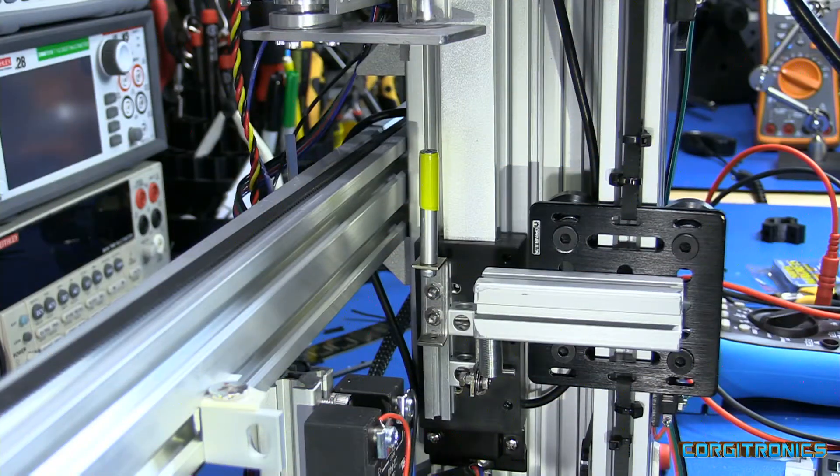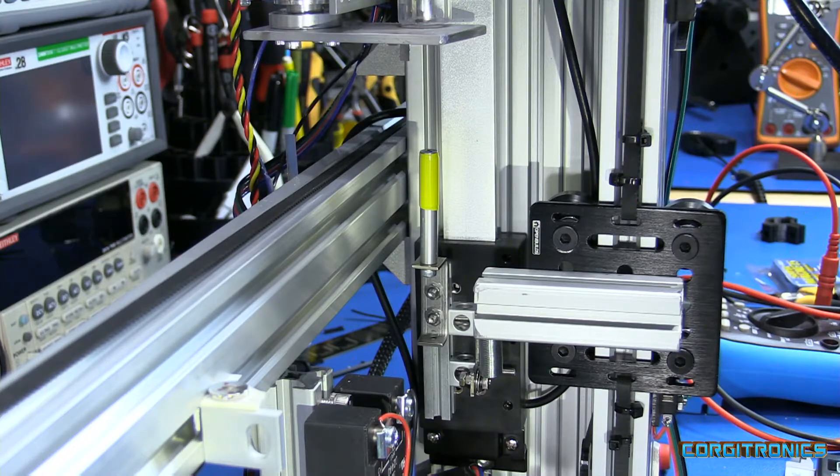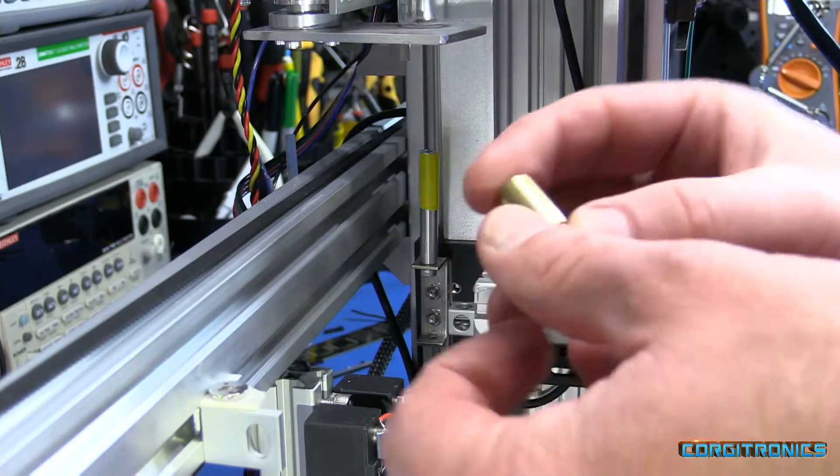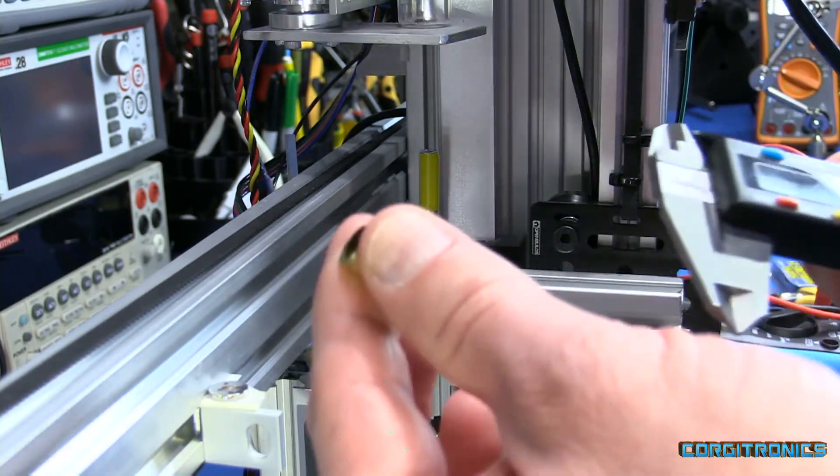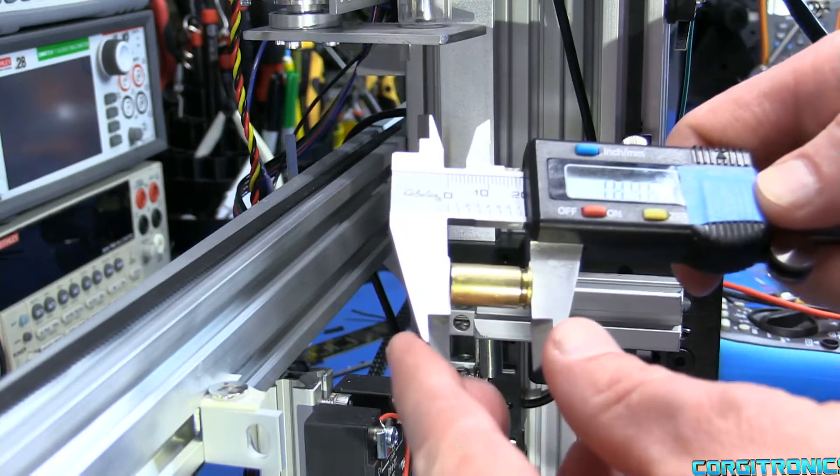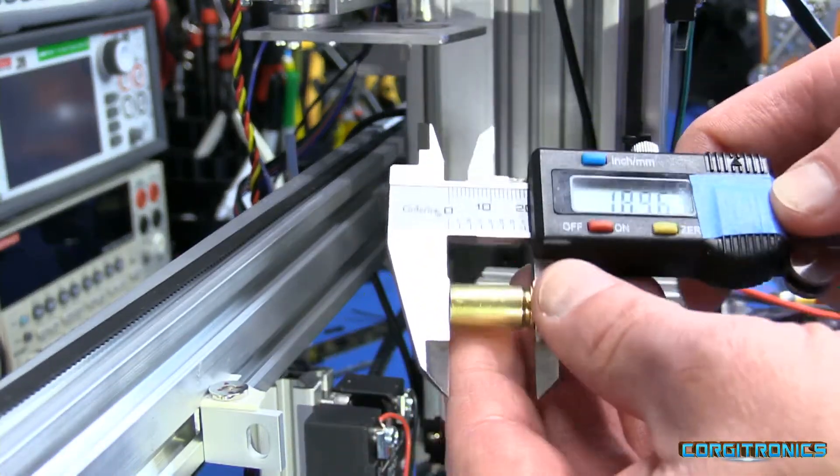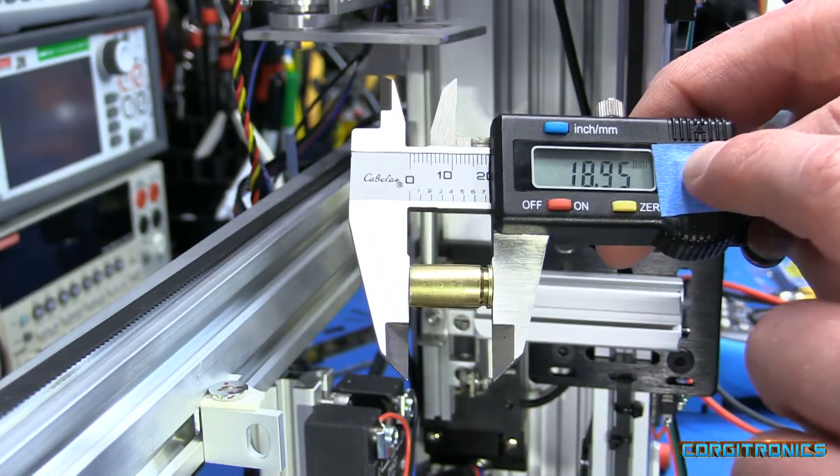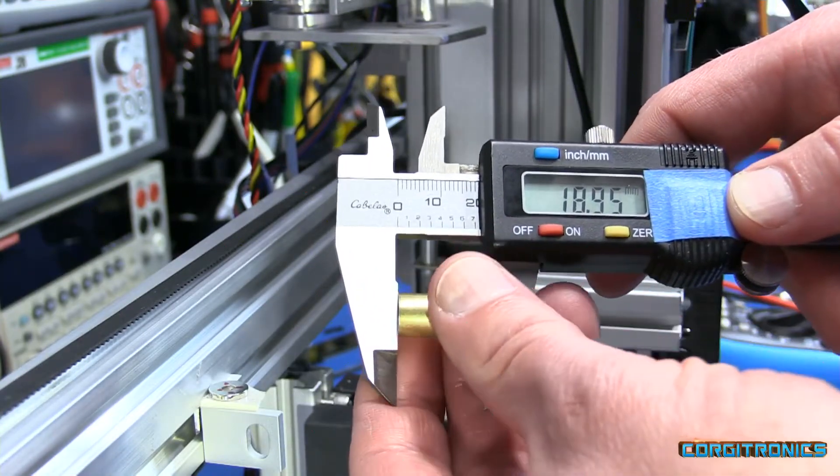The purpose of this machine is to sort brass cartridge cases into different bins, and one way to do that is to measure the length of them. Since this is a nine millimeter cartridge case, this is going to be about 19 millimeters in length, and sure enough it is.